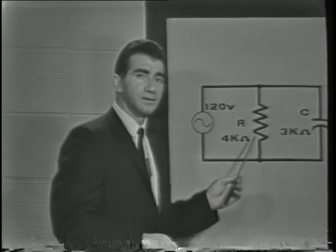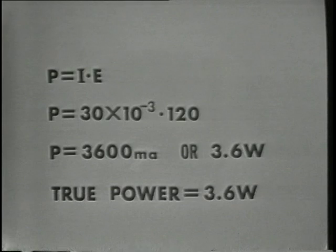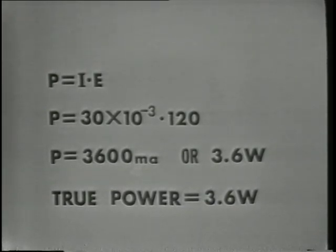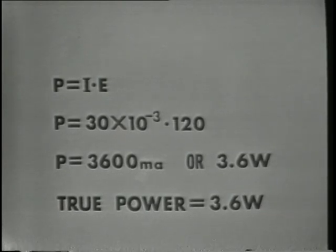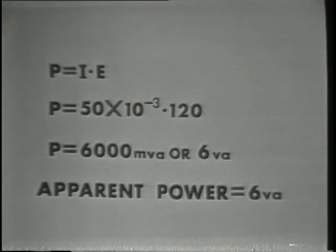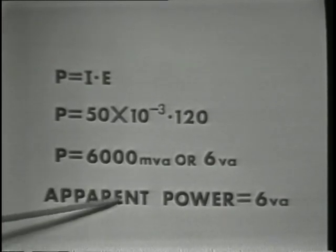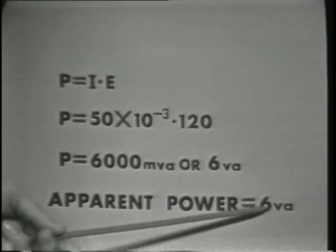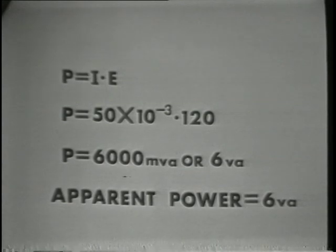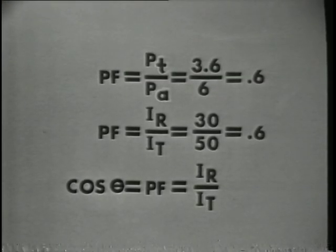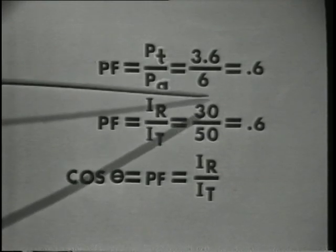From our previous calculations, IR is equal to 30 milliamps. Thus if we apply the power formula P equals I times E, we find the power dissipated in the circuit is 3.6 watts. This is true power — the power actually dissipated by the resistor. However, if we apply the power formula to the entire circuit, since we must use total current of 50 milliamps and EA of 120 volts, the circuit apparently uses 6 volt-amperes. Apparent power is measured in volt-amperes rather than watts because all of this power is not dissipated as heat.